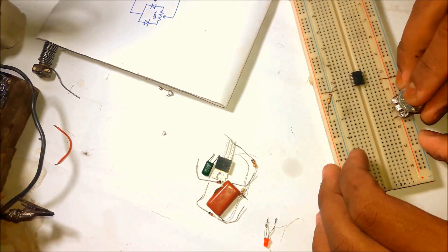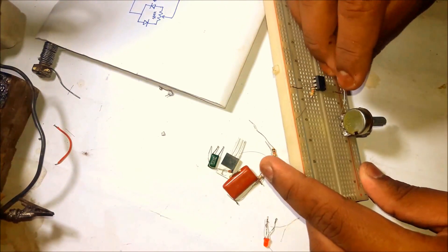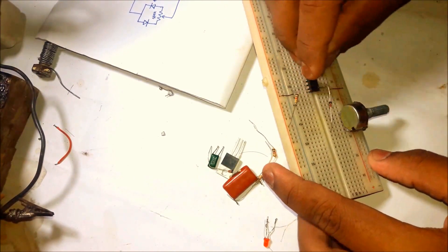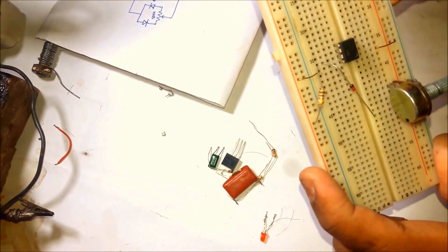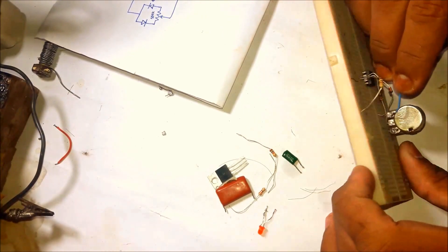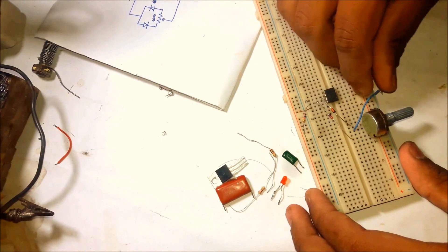Now mount the potentiometer on the breadboard. Make a bridge between the two advisor legs of the potentiometer and make a connection to pin 7. Connect the output leg of the potentiometer to pin 2. You can reverse the process by connecting the output to pin 7 and bridge to pin 2.